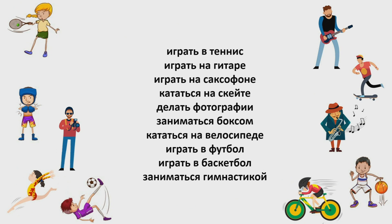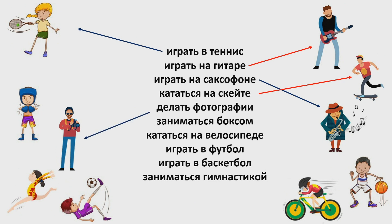Кто играет в теннис? Вот она! А кто играет на гитаре? Конечно, вот он! А кто играет на саксофоне? Вот он играет на саксофоне. А кто катается на скейте? Вот он! А кто делает фотографии? Вот он делает фотографии. А кто занимается боксом? Вот он занимается боксом. А кто катается на велосипеде? Вот он катается на велосипеде.